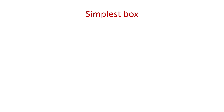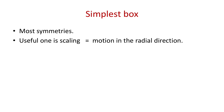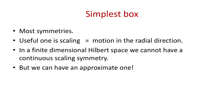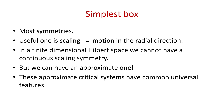What is the simplest box in which we can put a black hole? The simplest box is one that has the most symmetries. One useful symmetry for constructing simple boxes is a kind of scaling symmetry in your system, which has something to do with the motion in the radial direction towards the black hole. In a finite-dimensional Hilbert space, we cannot have a continuous scaling symmetry, because scaling symmetry would rescale the energy levels of your system, and with a discrete set of levels you cannot have an actual scaling symmetry—but we can have an approximate one.